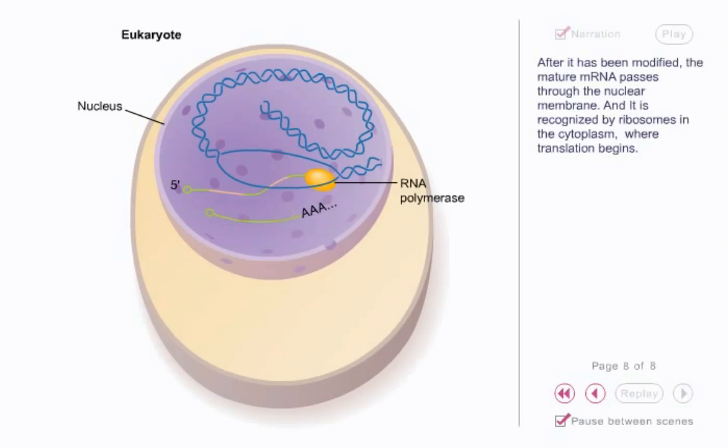After it has been modified, the mature mRNA passes through the nuclear membrane. It is recognized by ribosomes in the cytoplasm, where translation begins.